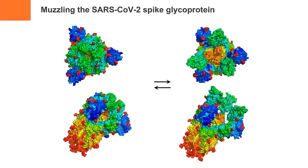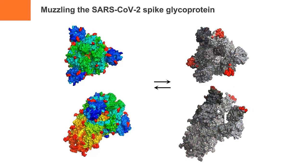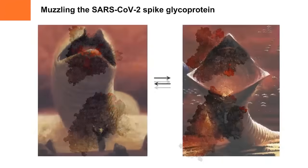To give you a sense of what this means: what you see on the screen now is the spike protein of the SARS-CoV-2 virus. If we clean this up a little bit, you can see that here in purple would be the ACE2 receptor that it binds to in a human cell. That is the mechanism through which the virus infects human cells.